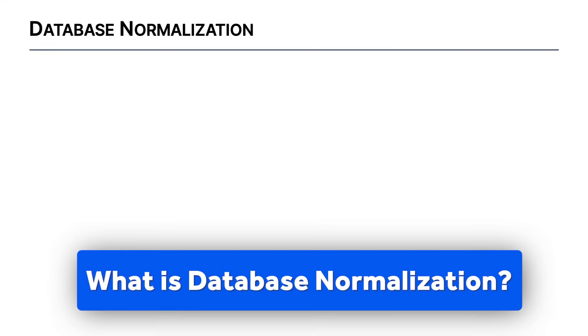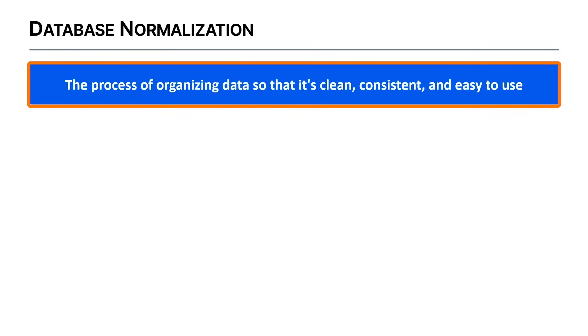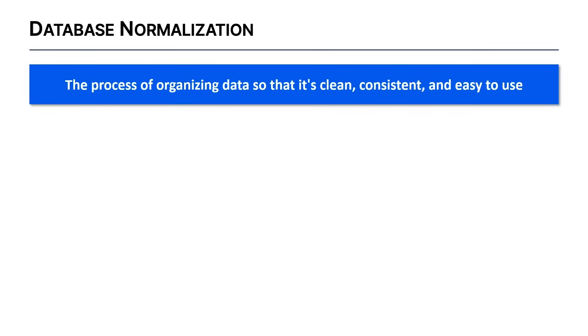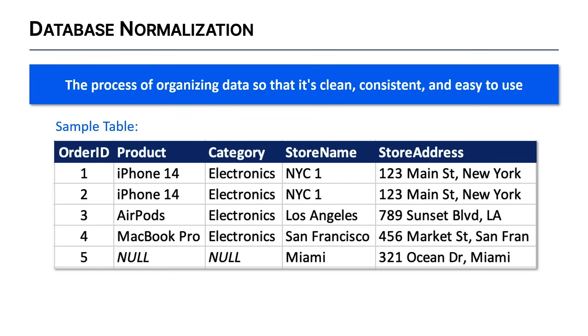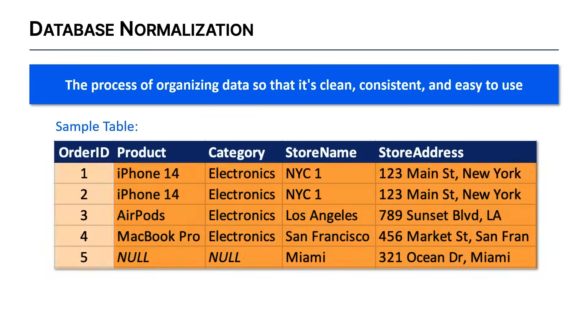What is data normalization? Simply put, it's the process of organizing data so it's clean, consistent, and easy to use. You might think that just putting it into a table with headers, order IDs, and organized values is enough — but that table actually has a lot of hidden problems, which is why we need to normalize it.